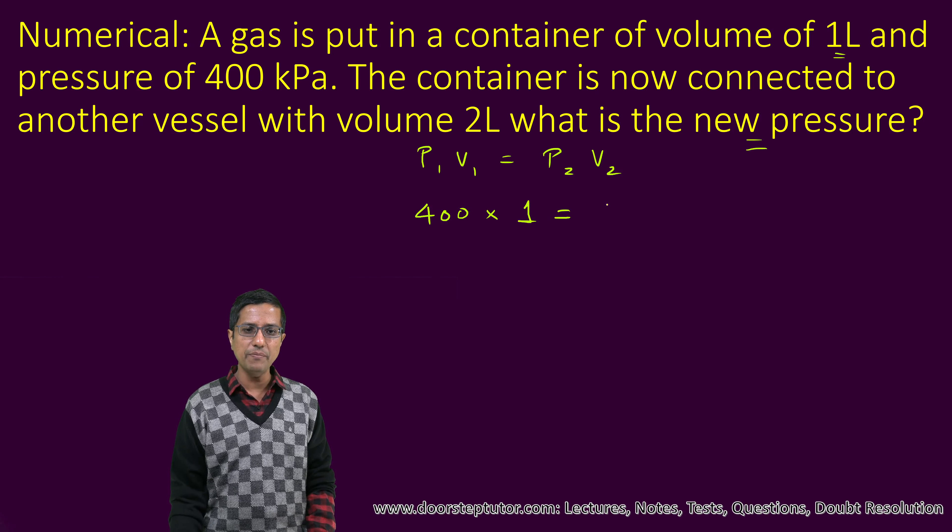Notice that most students here make the mistake of saying the new volume is 2 liters. That is not the case. What is happening is that we have our original vessel — let's say this was the vessel in which the gas was filled. Now this vessel is connected to a new container; the entire gas is not being moved into a new container of 2 liters. It is connected via a pipe. So the 1 liter and 2 liter vessels are joined together, making the total volume 2 plus 1, which is equal to 3 liters. So P2 will be equal to 400 divided by 3, and not 2. If you compute this, it comes out to be 133.33 kilopascal.